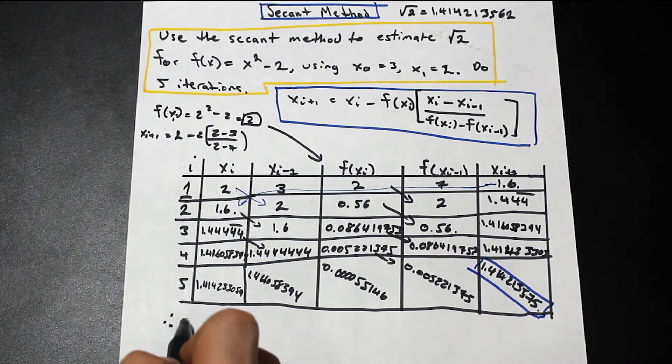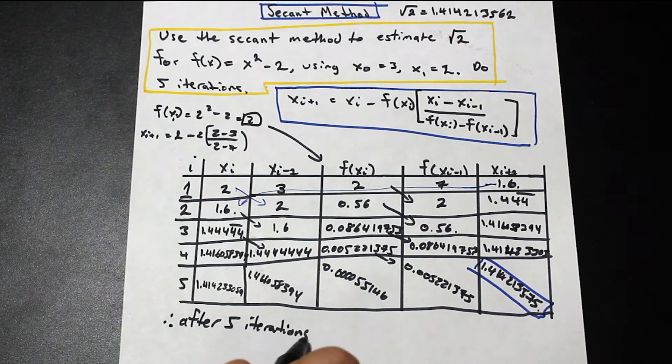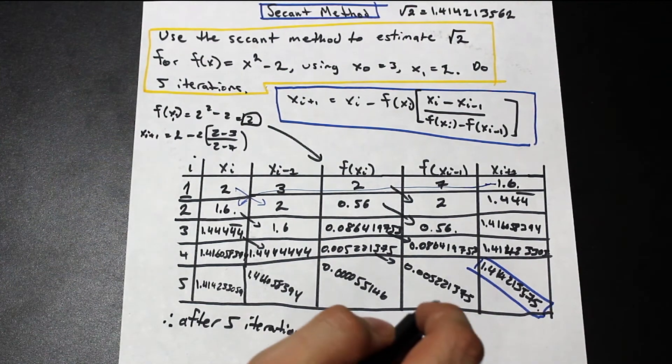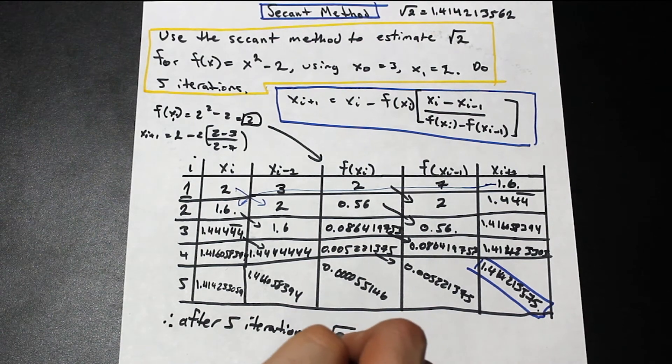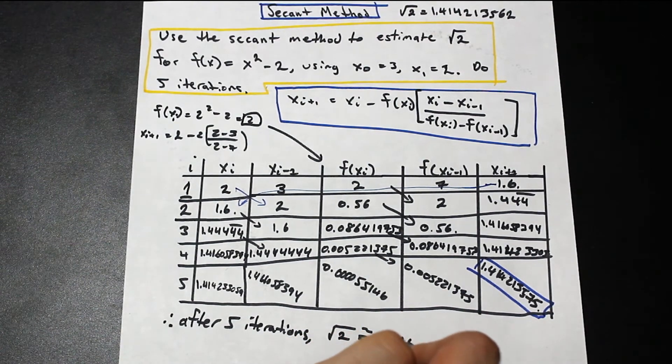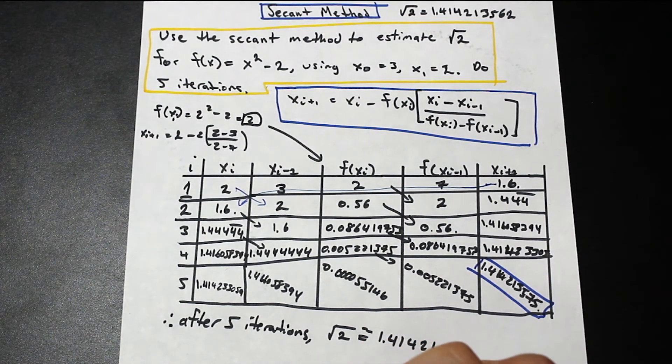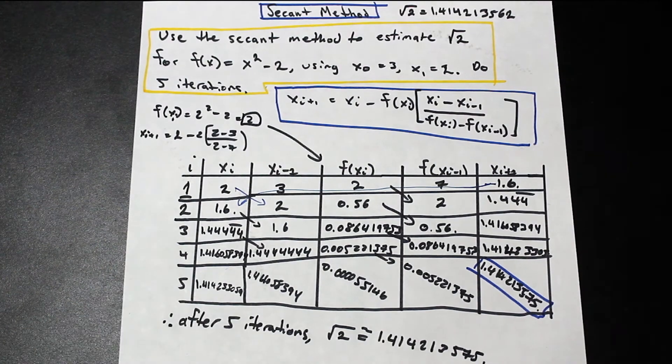Okay, so we're going to say after five iterations, root 2 is approximately 1.414213575. So that's the final answer here.